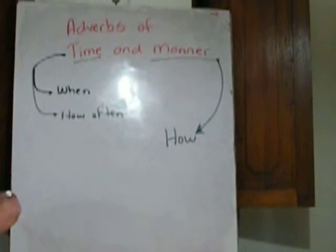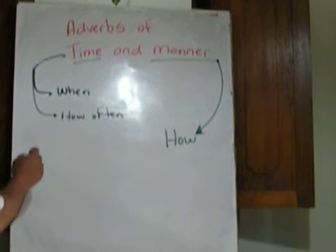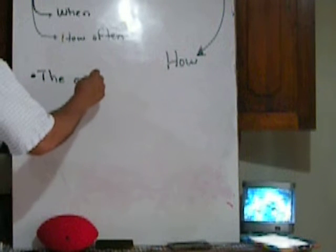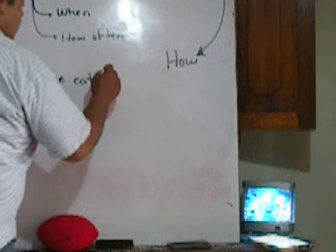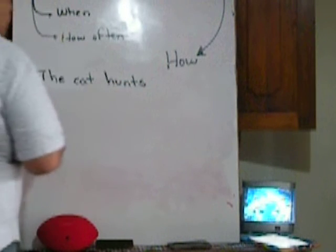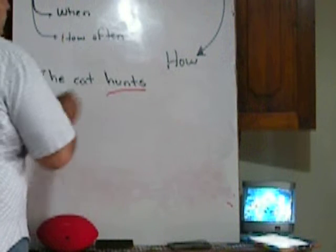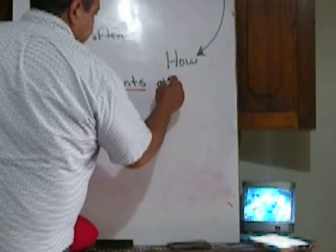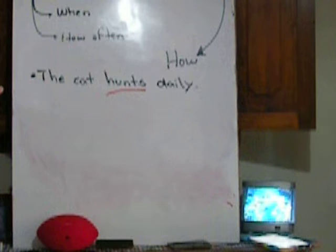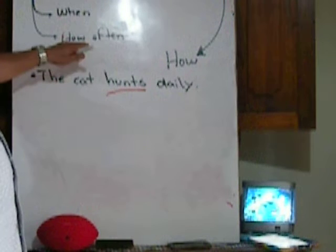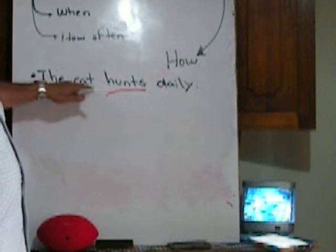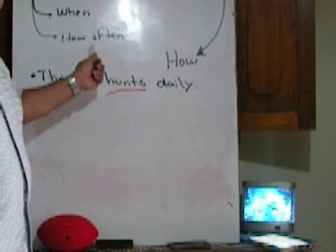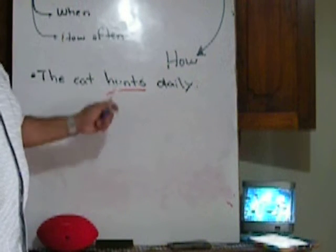Let's create an example. The cat hunts — this is the verb — daily. I'm going to tell you how often does the cat hunt. The cat hunts daily. This is answering me how often the cat hunts.